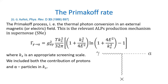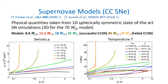As supernova models, we have taken several state-of-the-art spherically symmetric simulations: the 8.8, 11.2, 18, and 25 solar mass successful core collapse supernova models, plus two failed ones — a 40 solar mass model of the same type, and a 70 solar mass 3D simulation. As seen from the plots, both the temperature and density inside the star are strongly dependent on the model. For the failed supernova models, we expect both temperature and density to diverge when the star becomes a black hole.